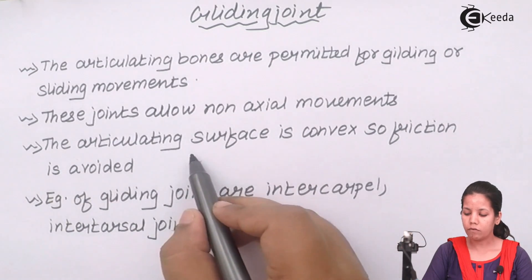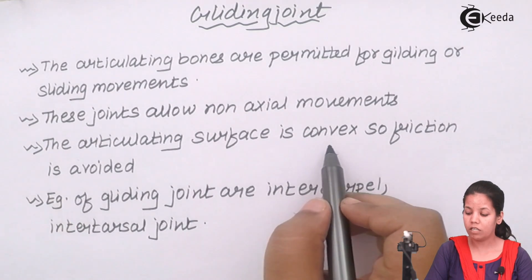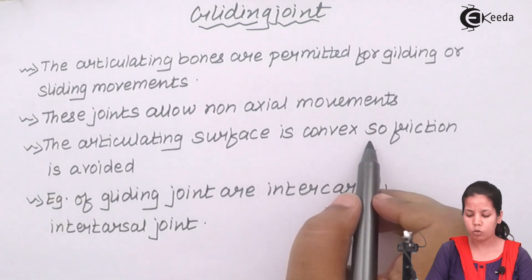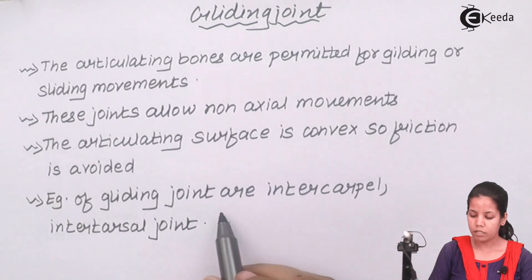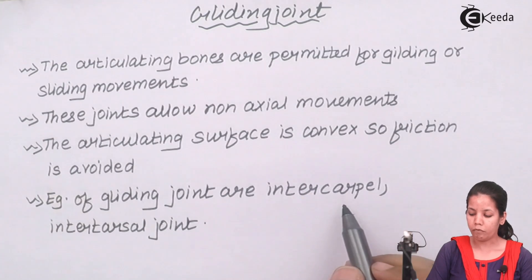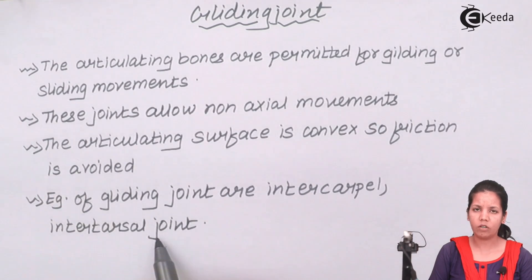The articulating surface in this region is convex, so friction is always avoided during movement. Gliding joints are present in intercarpular regions and intertarsal regions — these are the regions where gliding joints may be present.